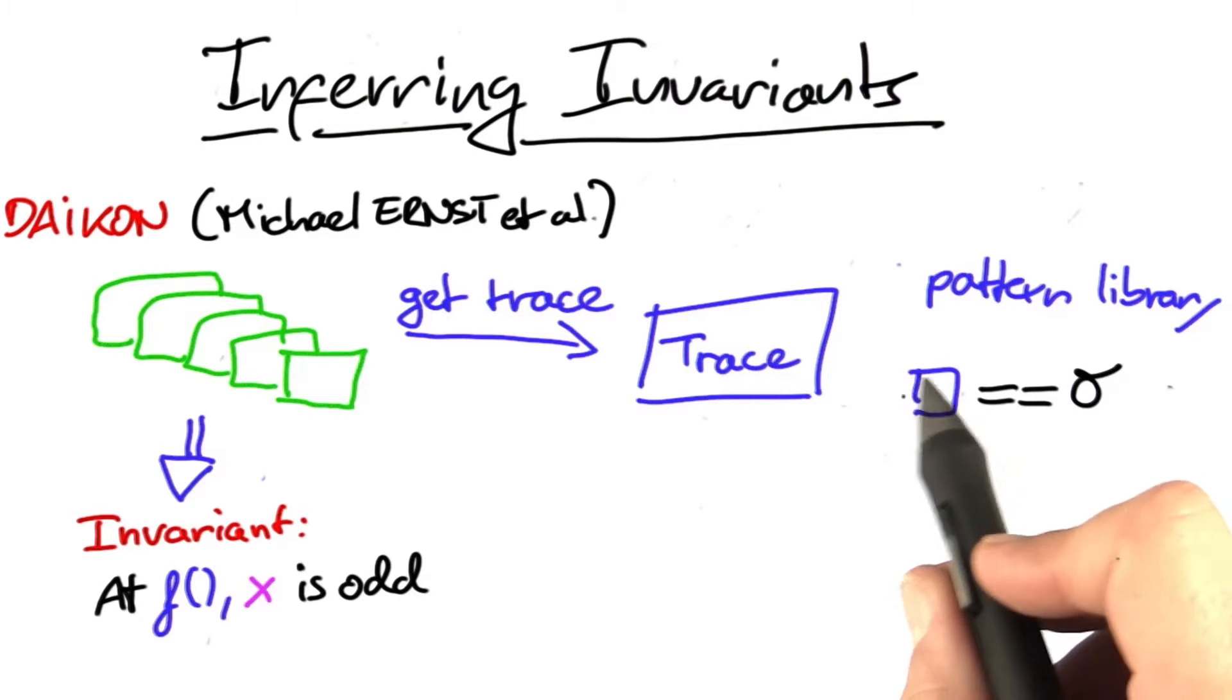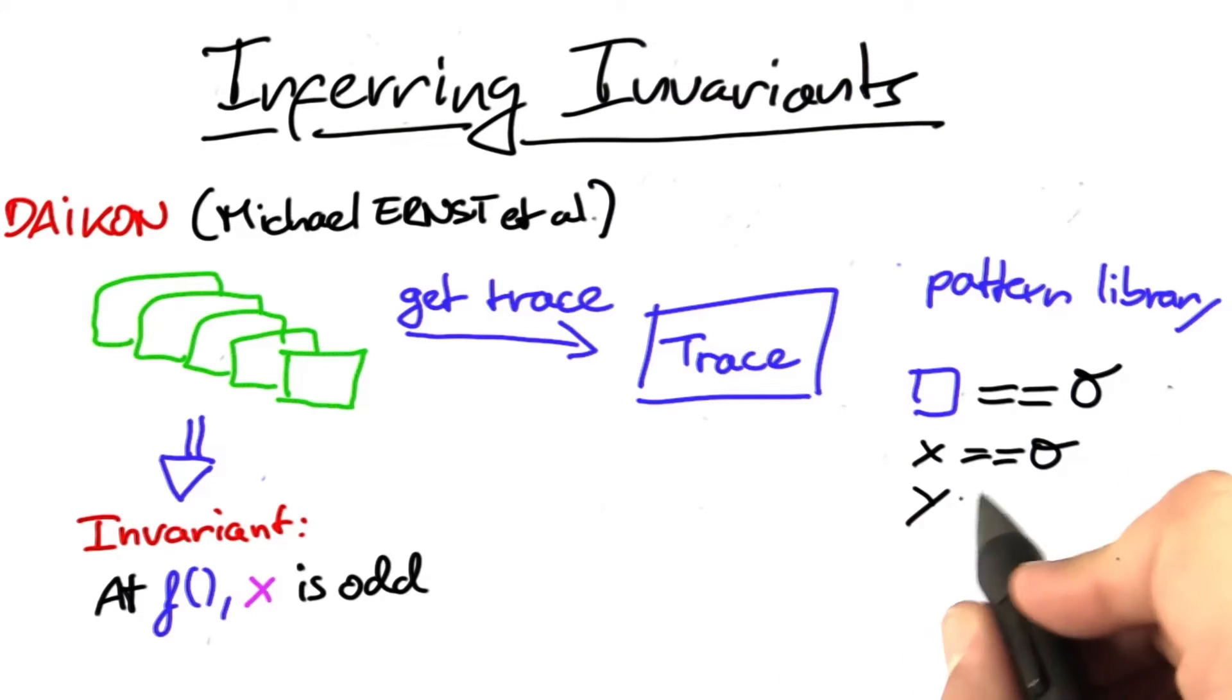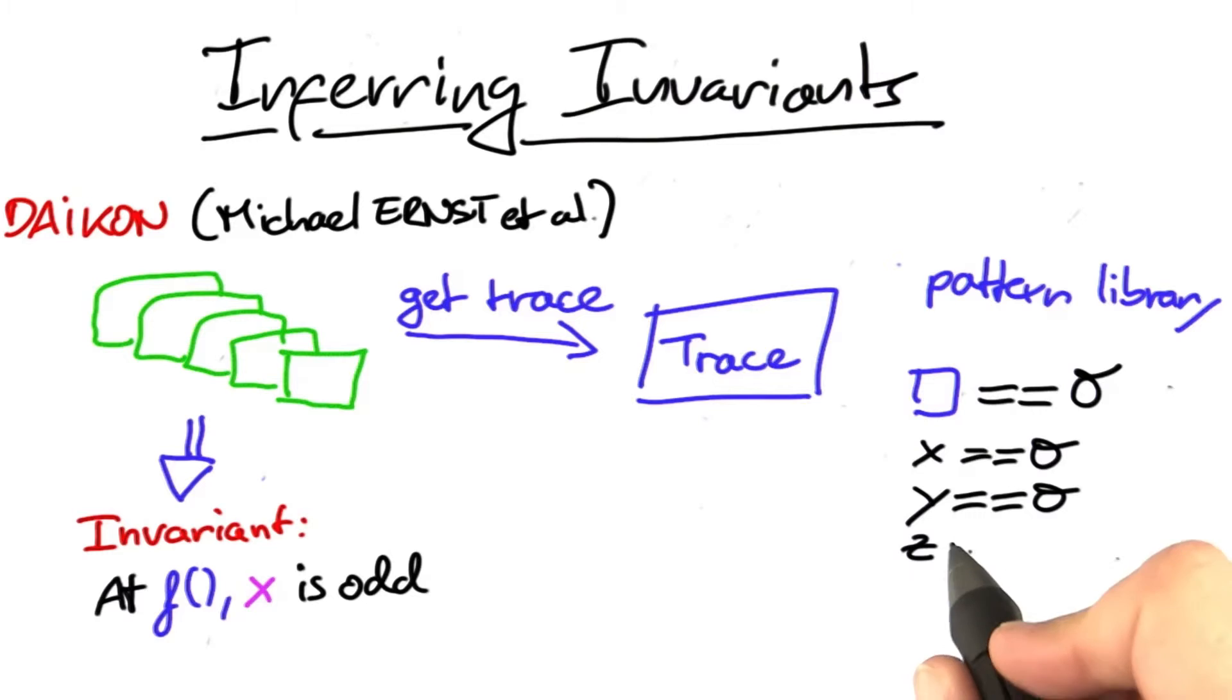That is, it replaces the placeholder with every single variable found in the trace. So it checks whether x equals zero, whether y equals zero, whether z equals zero, and so on. Only those patterns that match are retained; those that don't match are eliminated. If x and y are not zero, they're eliminated. Those that match are retained.